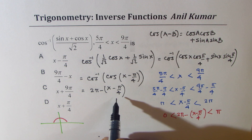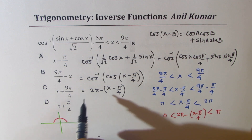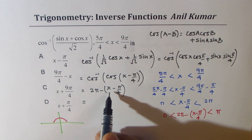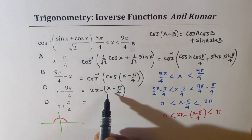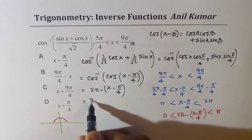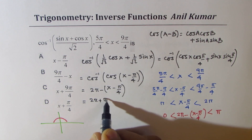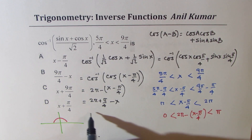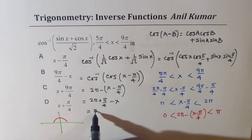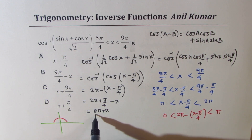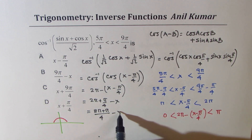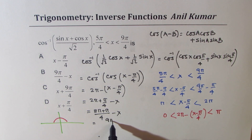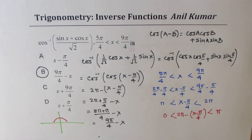After simplification: 2π − x + π/4, which gives 8π/4 + π/4 − x = 9π/4 − x. So option B is the right answer.